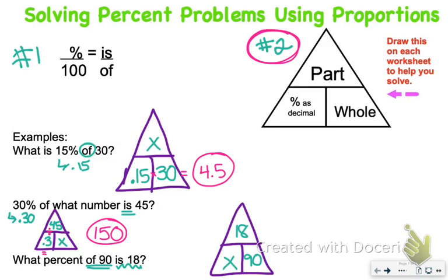And then our X is going to be our percent as a decimal. So once again, we have two numbers on top and on the bottom, so we divide 18 divided by 90. That gives us 0.2, but we have to remember the bottom left section is the percent as a decimal. So